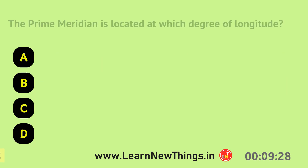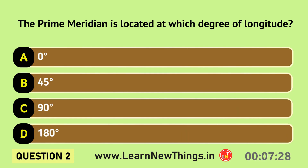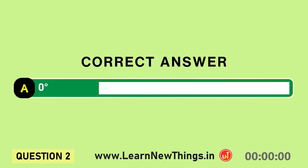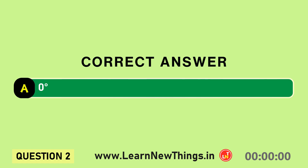The prime meridian is located at which degree of longitude? Zero degrees.